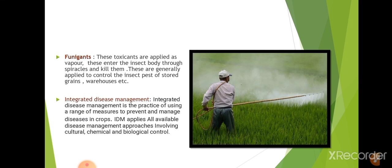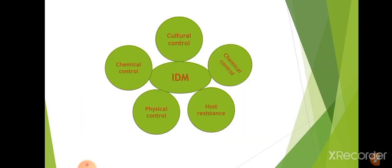Integrated disease management (IDM) is the practice of using a range of measures to prevent and manage diseases in crops. IDM applies all available disease management approaches involving cultural control, chemical control, biological control, host resistance, and physical control — all integrated together to manage disease in crops effectively.